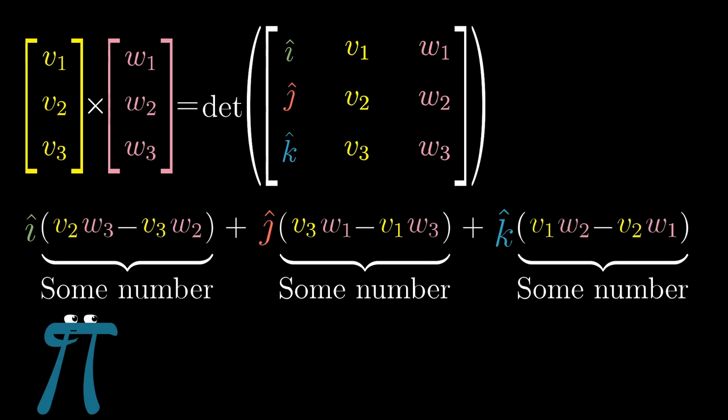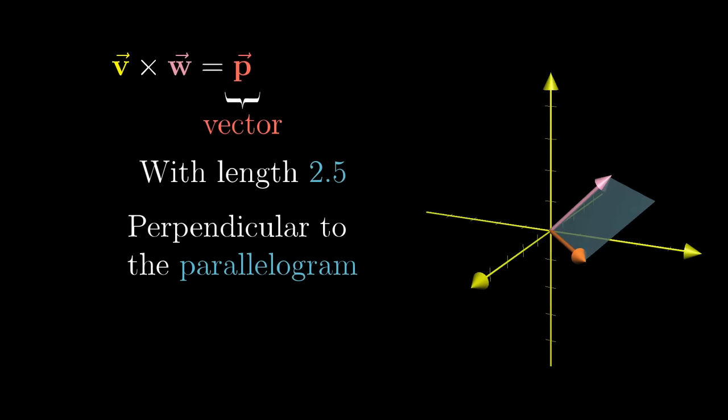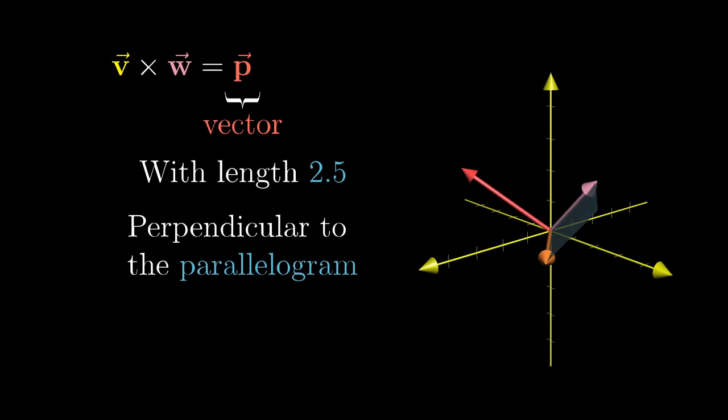And the vector defined by that linear combination, students are told to just believe, is the unique vector perpendicular to v and w, whose magnitude is the area of the appropriate parallelogram, and whose direction obeys the right-hand rule.